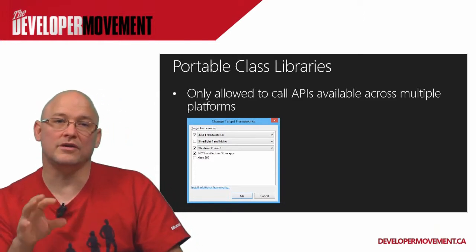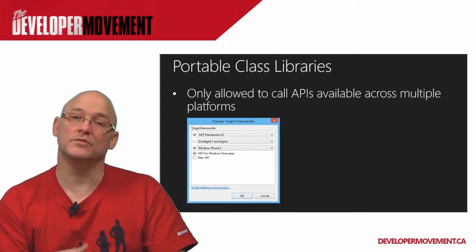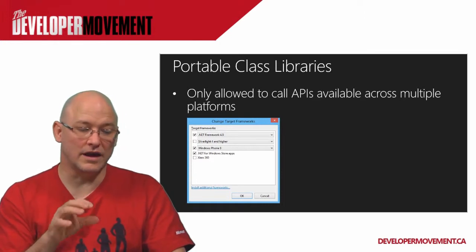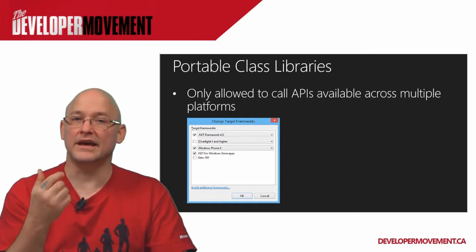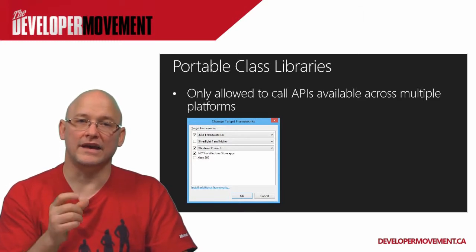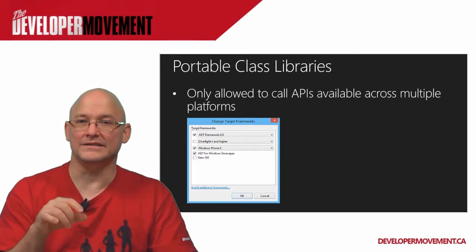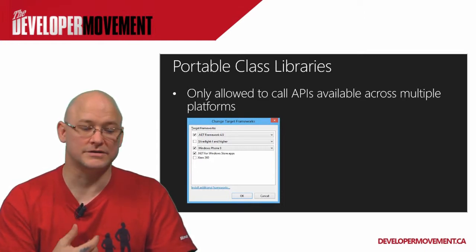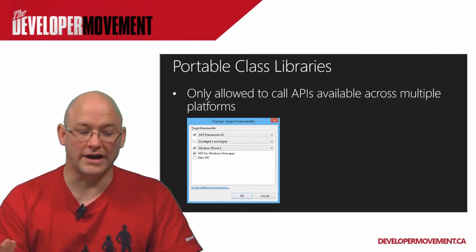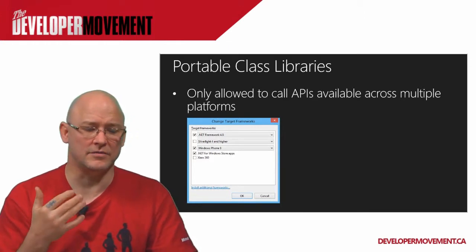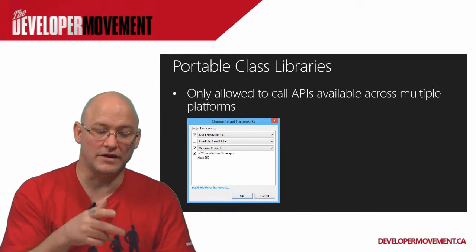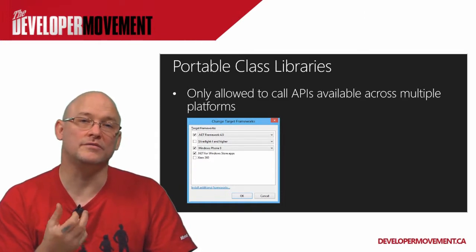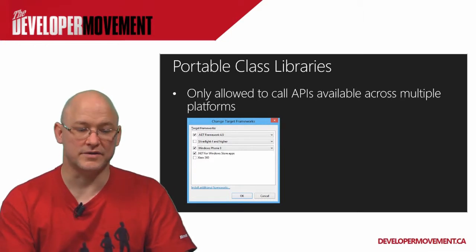A portable class library is only allowed to call APIs that have been available across the platforms you choose. When you set up a new portable class library, you're presented with a 'Change Target Frameworks' dialogue. The more target frameworks you have, the less you can utilize in the APIs you call within that portable library, because you can only use APIs available across all those frameworks. If you select Silverlight 4 and higher, you'd lose APIs not available there but present in .NET Framework 4 and 5, Windows Phone 8, and .NET for Windows Store apps.